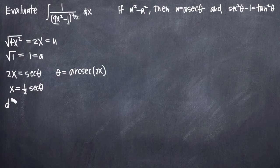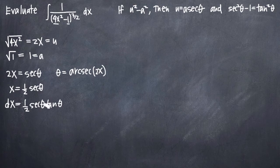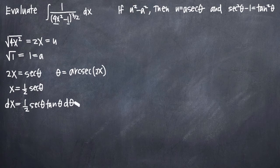We're also going to need dx, the derivative of x. The derivative of 1/2 secant theta is 1/2 times secant theta tangent theta, because the derivative of secant theta is secant theta times tangent theta, and 1/2 is a constant coefficient. So dx equals 1/2 secant theta tangent theta dθ.